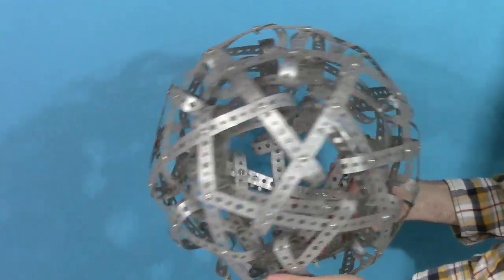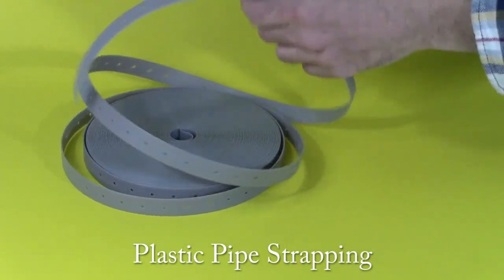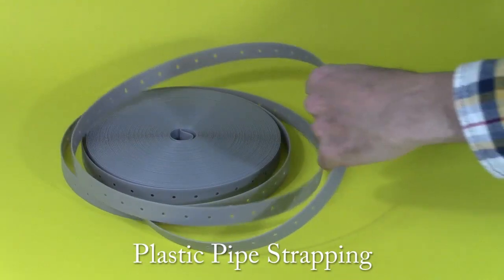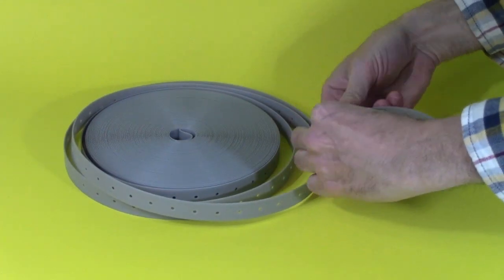The problem is when you cut it, you may have sharp edges, so that didn't seem suitable, but there's something similar called plastic pipe strapping. You can also buy at the hardware store. It's easy to cut with scissors and you can form simple things out of it.